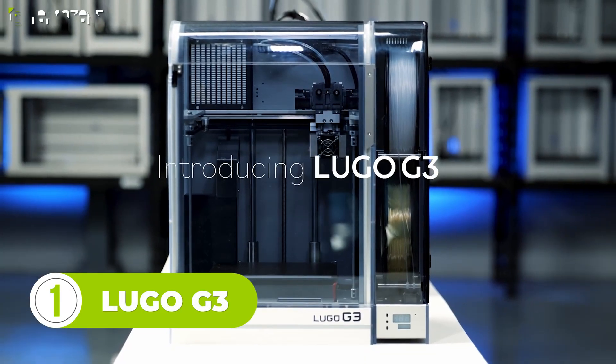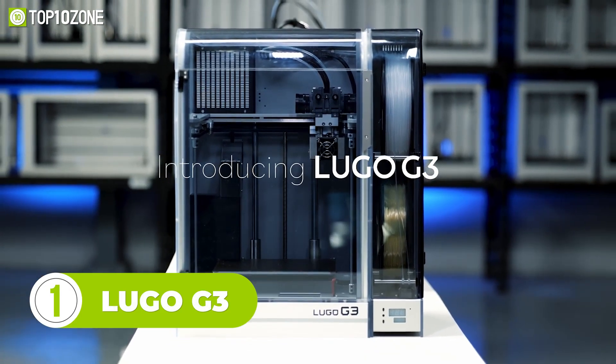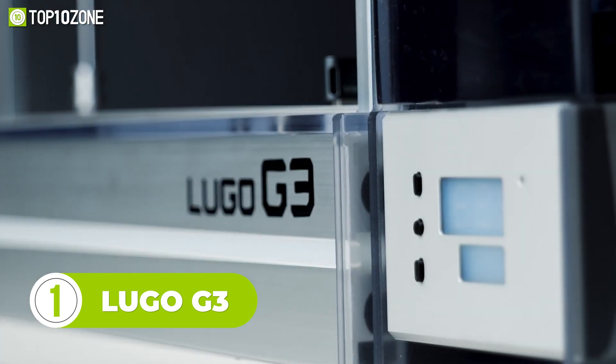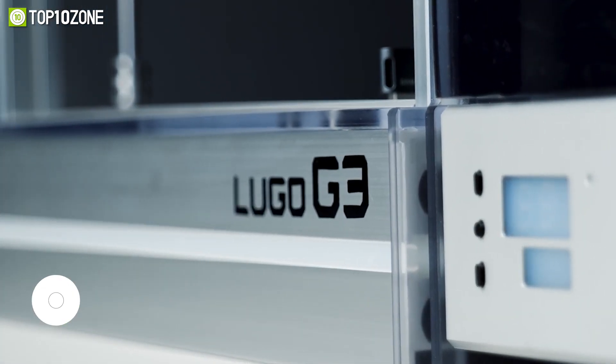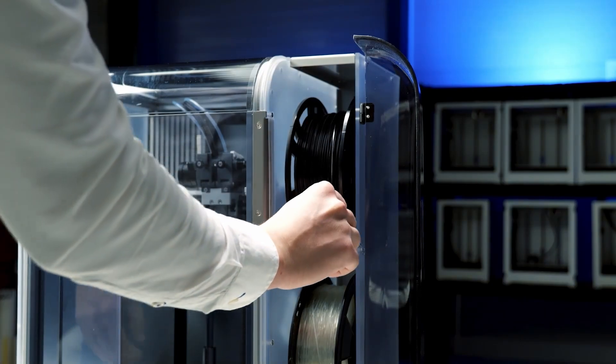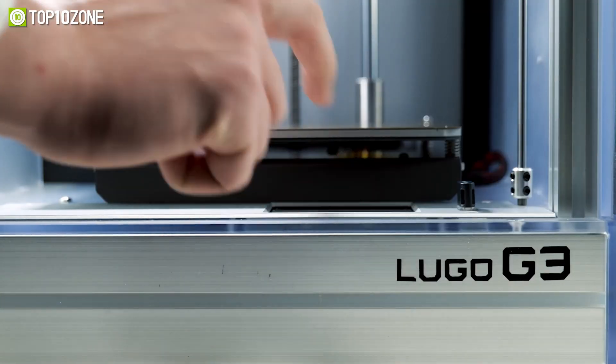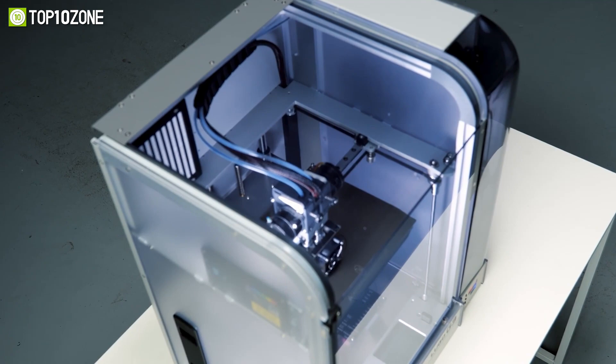Designed to produce beautiful, jaw-dropping 3D prints, the Lulzbot TAZ is one of the most efficient dual-extruder 3D printers that deliver unprecedented results. The printer supports almost all filament types currently available on the market, and the dual printing capability enhances efficiency.